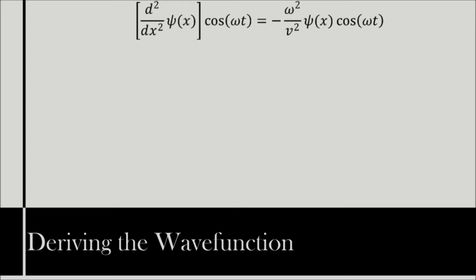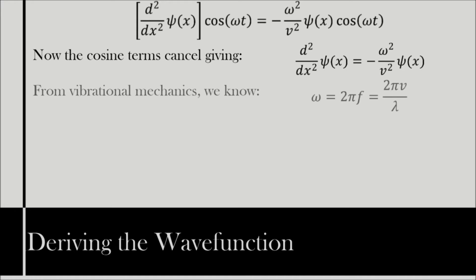The cos(ωt) terms then cancel out, giving an equation valid for classical waves. Second order differential with respect to x of ψ(x) equals minus ω squared over v squared times ψ(x). From this, we now, using the wave equation from Louis de Broglie, obtain the time-independent Schrödinger equation. Given that ω equals 2πf, which equals 2πv over λ.